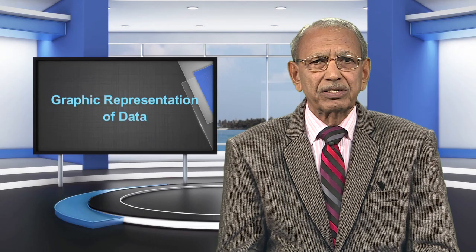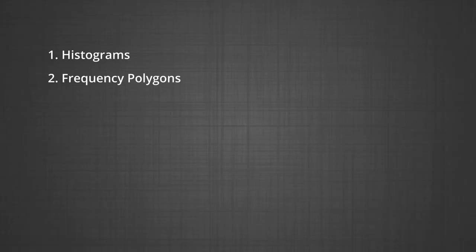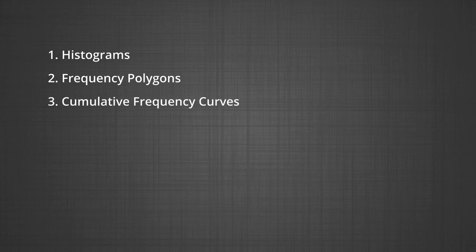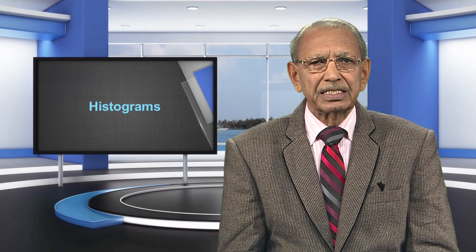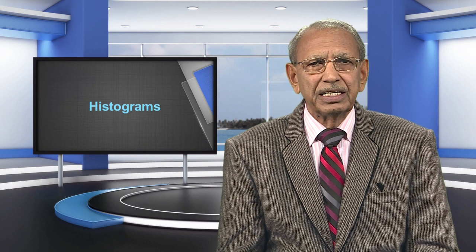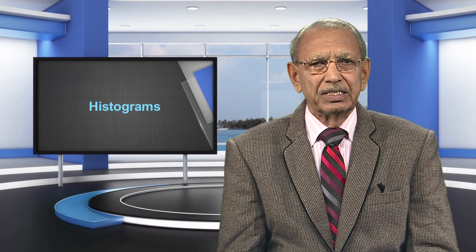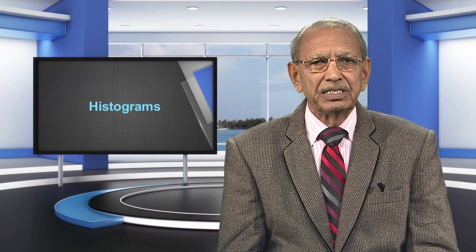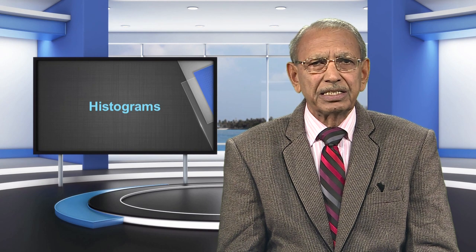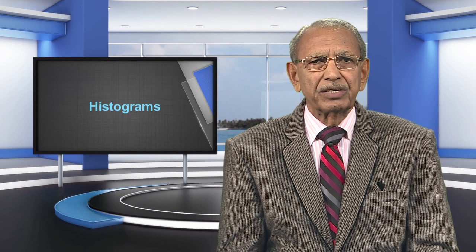A description of the following will be presented: number one, histograms; number two, frequency polygons; number three, cumulative frequency curves. We start with histograms. A histogram is a set of vertical bars with equal base but different heights. Therefore it is also known as a bar graph, or frequency histogram. The mechanics of construction will be explained by reference to the data of table one, plotted as a histogram in figure one.